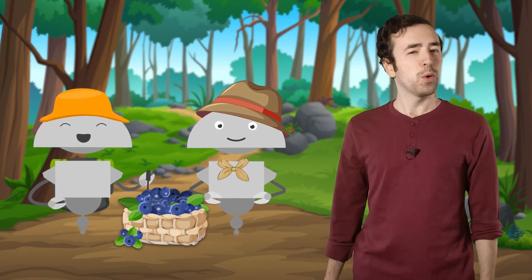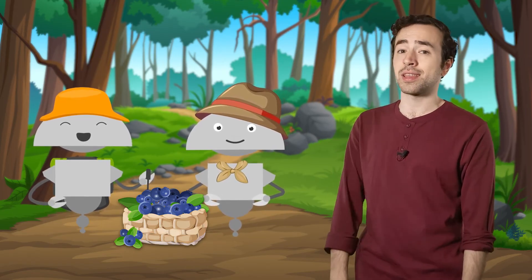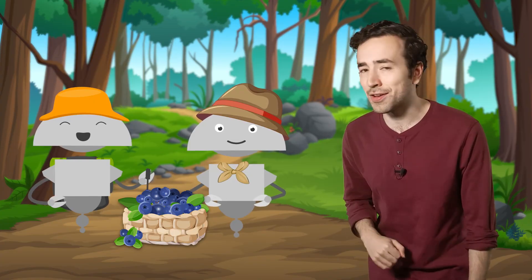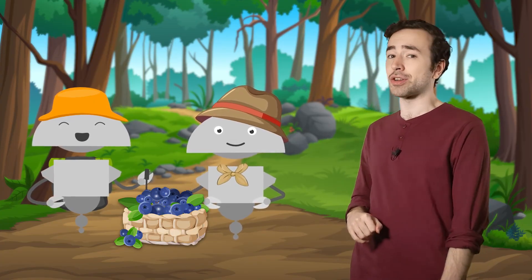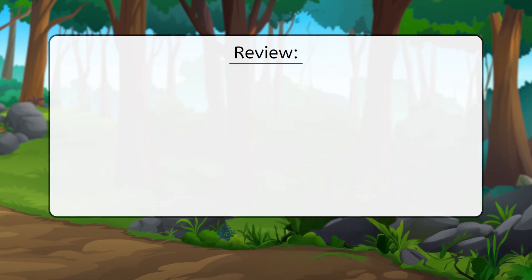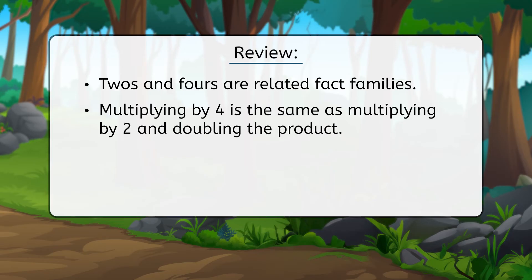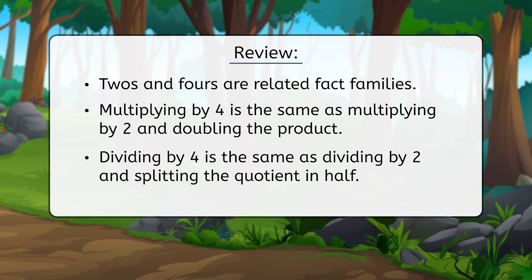So, what have we learned today besides the fact that Forrest is a fantastic forager and fact finder? Well, now you know that 2s and 4s are related fact families. Multiplying by 4 is the same as multiplying by 2 and doubling the product, while dividing by 4 is the same as dividing by 2 and splitting the quotient in half.